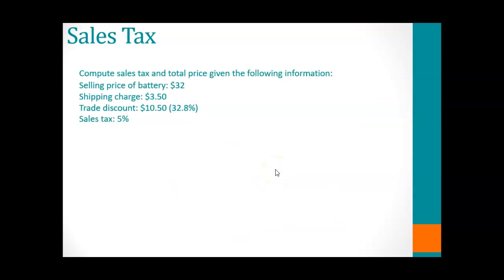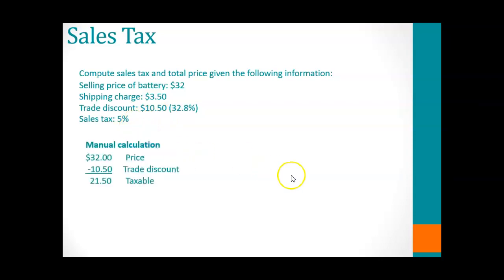For example, let's say that we're selling batteries with a sales price of $32. We're going to ship them — the shipping charge is $3.50. We're going to give the client a discount of $10.50, and the sales tax rate is going to be 5%. The actual sales tax is based upon the taxable amount of the product being sold, so the $32 minus the trade discount gives us a taxable amount of $21.50.